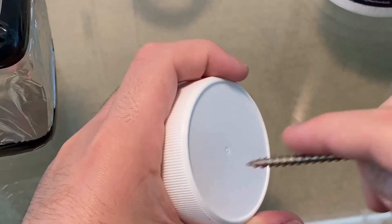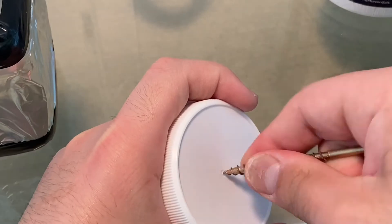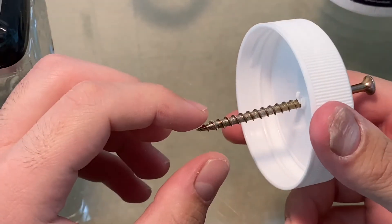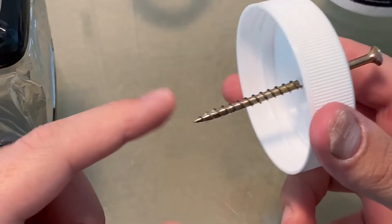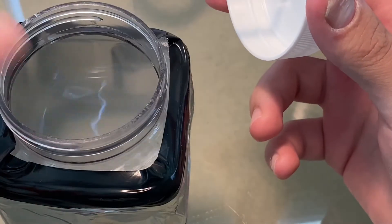Next you want to take your screw and screw it in the middle of the cap. It should look like this. You don't want to screw it all the way in but you just want to screw it enough so the metal part can touch the salt water.